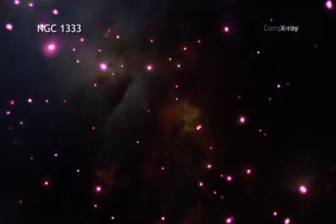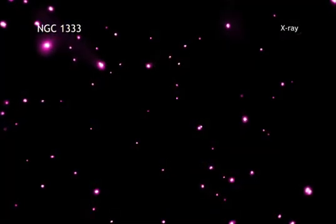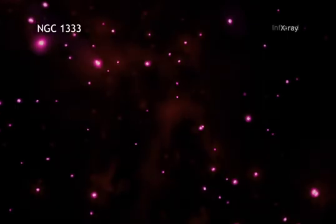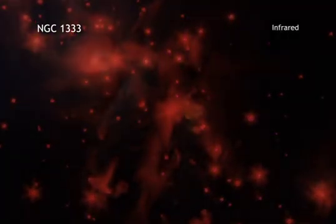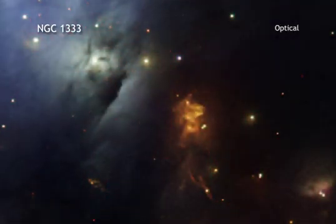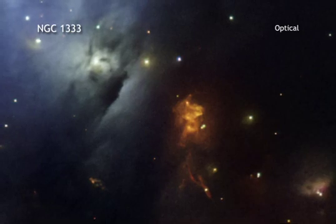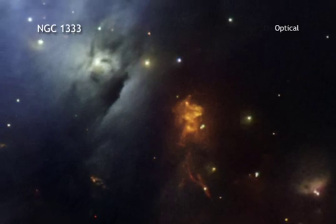A new composite image combines X-rays from NASA's Chandra X-ray Observatory with infrared data from the Spitzer Space Telescope as well as optical data from telescopes on the ground, the Digitized Sky Survey, and the National Optical Astronomical Observatory's MIAL 4-meter telescope on Kitt Peak.